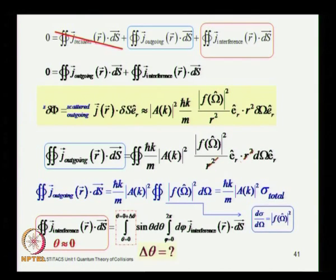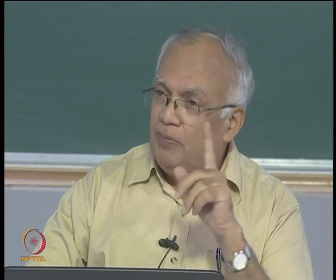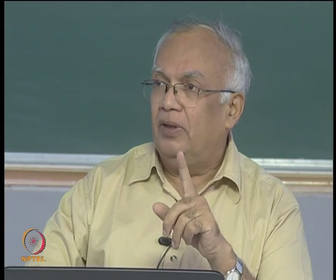Typically all angles would involve θ going from 0 to π and φ from 0 to 2π, but in this case the integration over θ can be restricted to 0 to 0 + δθ, where δθ is a tiny angle — that is the forward scattering. What is the value of δθ? It is certainly not 0; it is small, no matter how small, it is not 0, it is a tiny angle.